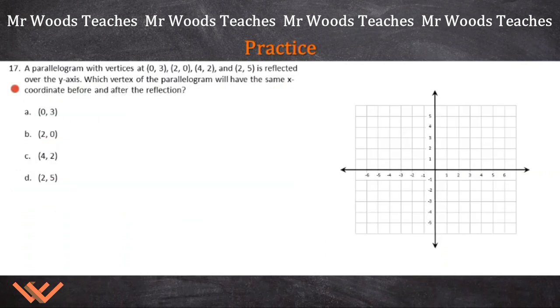Number 17. A parallelogram with vertices (0, 3), (2, 0), (4, 2), and (2, 5) is reflected over the y-axis. Which vertex of the parallelogram will have the same x-coordinate before and after the reflection? So let's take a look. What do we need? It tells us it's a parallelogram and it has these vertices here. So it asks for the y-axis, and then it asks for which vertex of the parallelogram has the same x-coordinate before and after the reflection. So that's all pertinent information.